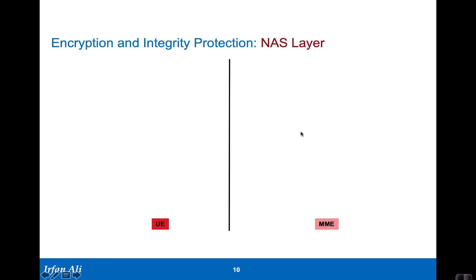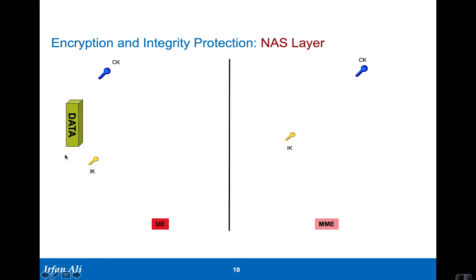Let's look at how encryption and integrity protection is actually done for messages at the NAS level and at the access stratum level. We'll examine how we can encrypt and integrity protect NAS level messages. We have the ciphering key and integrity protection key for the NAS level at both the UE and the MME. Let's take a transmission that happens from the mobile to the MME.